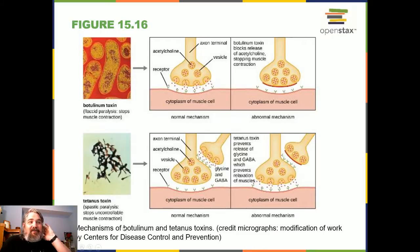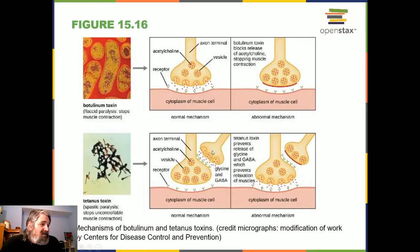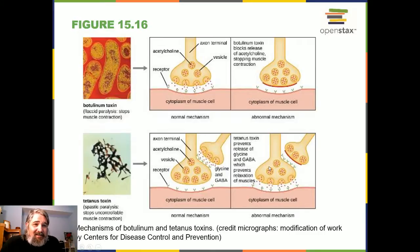Here's the cartoon for botulinum toxin: it blocks acetylcholine release at the neuromuscular junction, preventing vesicle fusion permanently for that particular neuron. The tetanus toxin comparison cartoon shows an inhibitory interneuron that would normally prevent the NMJ from firing repeatedly. With tetanus toxin blocking that inhibitory signal, the NMJ fires and contracts continuously.